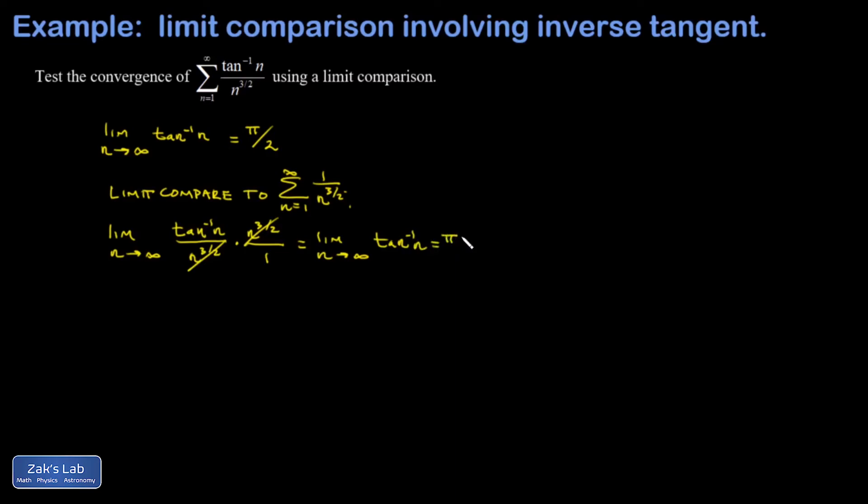Which I know is π/2. And because this limit comparison came out to a constant, it means the convergence behavior of our two series must be the same. With 1 over n to the three halves being a convergent p-series, we conclude that our series converges.